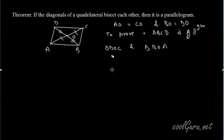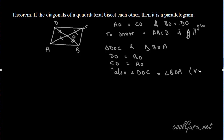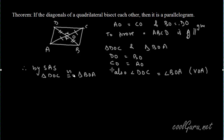It is given that side DO is equal to side BO, and side CO is equal to side AO. Also, angle DOC is equal to angle BOA, as these are a pair of vertically opposite angles. Therefore, by the SAS congruency theorem, triangle DOC is congruent to triangle BOA.